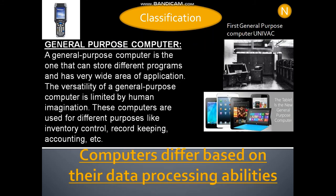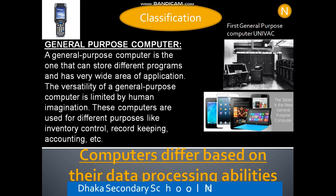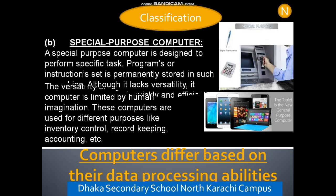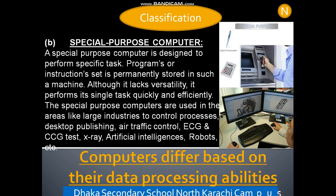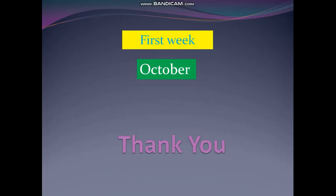A general purpose computer is one that can store different programs and has a very wide area of application. A special purpose computer is designed to perform specific tasks. Thank you.